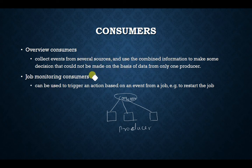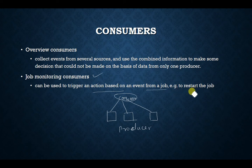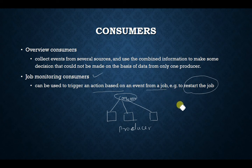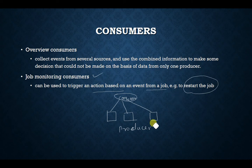The fourth type is the job monitoring consumer, which can trigger an action based on an event from a job — such as restarting a job. Whenever a job event occurs, the job monitoring consumer can restart it or trigger another event based on data collected from the producer.